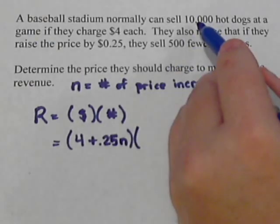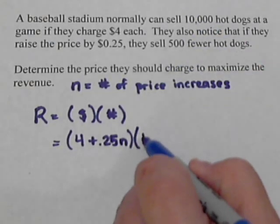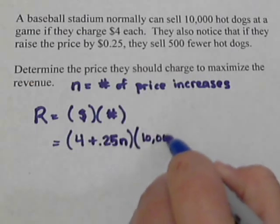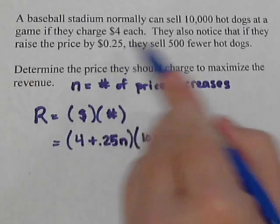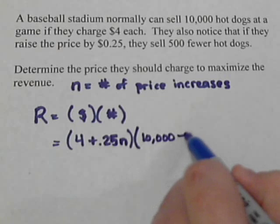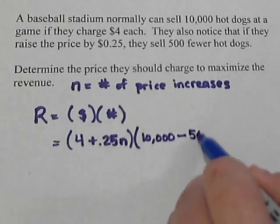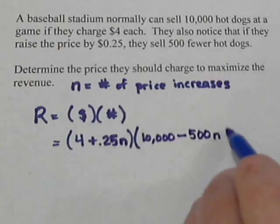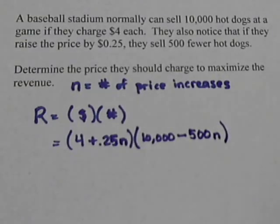What's our quantity going to be? Well, at $4, we start out with 10,000. But if we raise the price, we lose, so that's going to be minus 500 hot dogs each time. So, minus 500n.